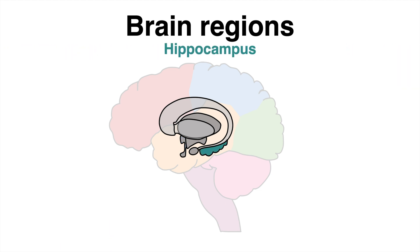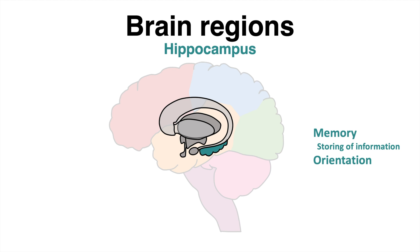The hippocampus, which lies within the temporal lobe, is mainly responsible for storing information in long-term memory. From patients without a hippocampus, we know that orientation is lost. Therefore, we conclude that another major role of this brain structure is to facilitate orientation.